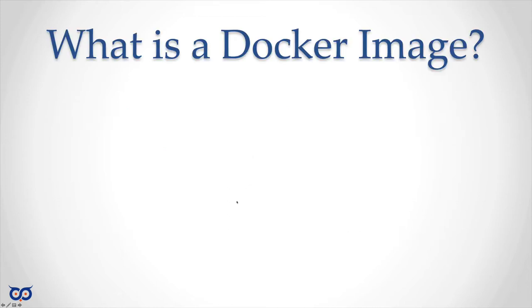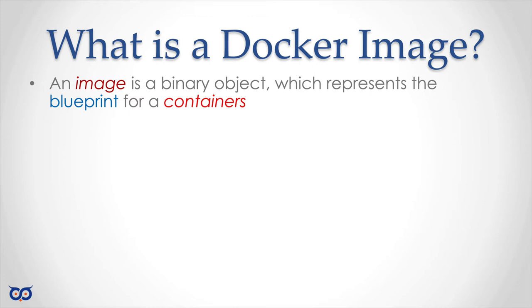So what is a Docker image? So far we've been using Docker images to create containers. An image is a binary object — we can't really examine it directly — but there's a Docker image registry that manages this. Think of it as a place that knows all the images on your computer, locally or remotely. It holds images that people contribute, and when you create a container from an image that's not local, it pulls it from a registry. By default, Docker pulls from Docker Hub.